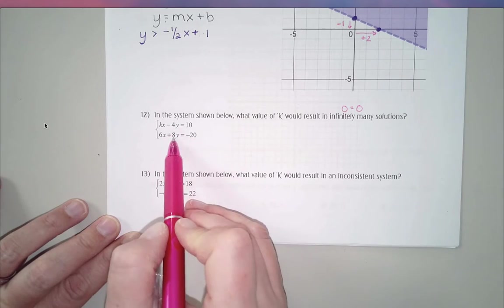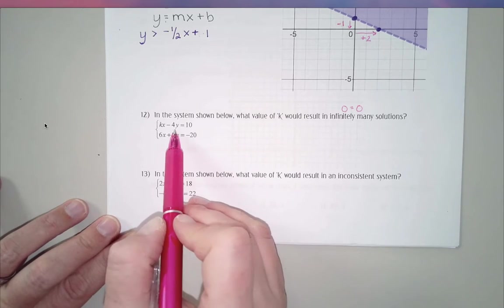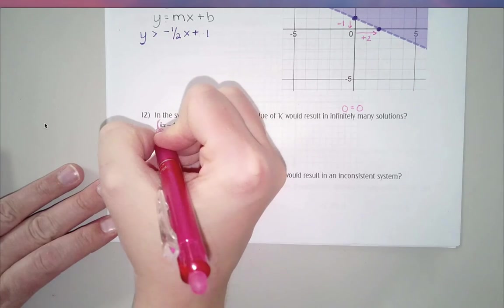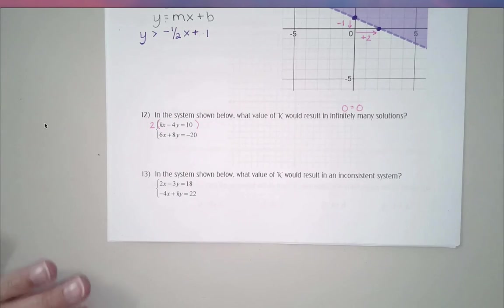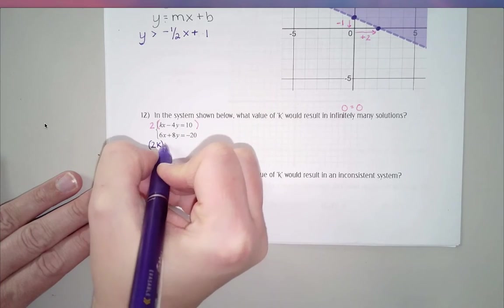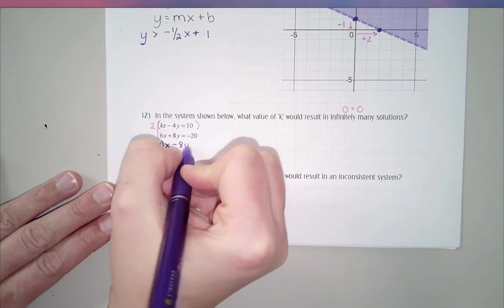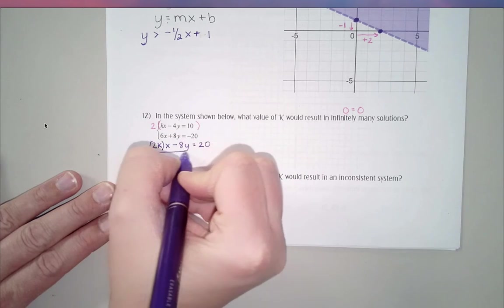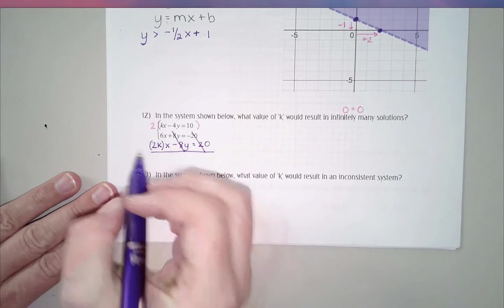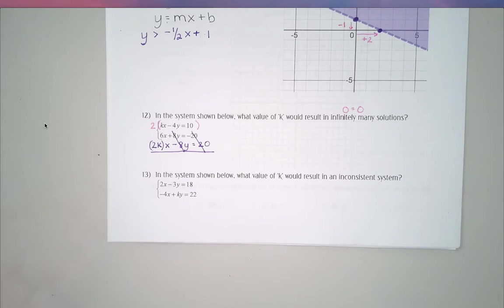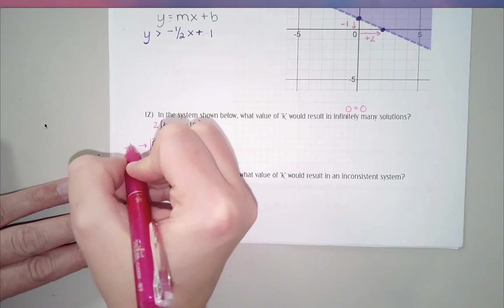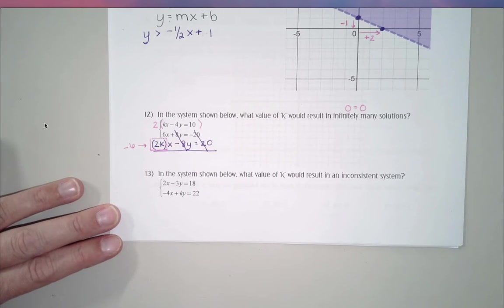The first thing I need to do, I don't know what this k value is, so I can't worry about how I'm going to get these to cancel out. I can change my k value to make it work out any way I want. But I want to think about how can I get y's to cancel? Looking at that top equation, if I were to multiply that by 2, I would get a negative 8 to cancel with the positive 8. So I'm going to multiply by 2 on the top.